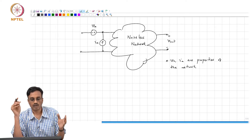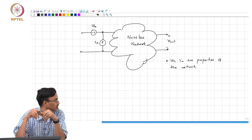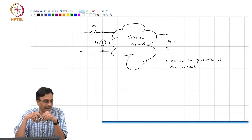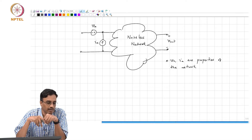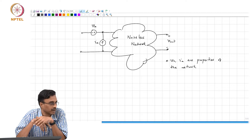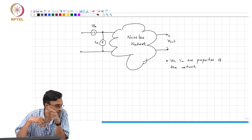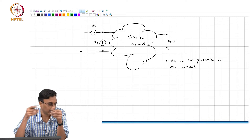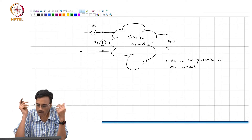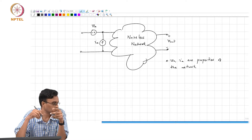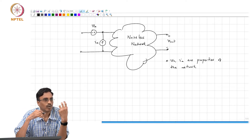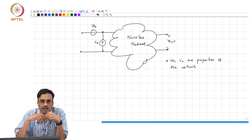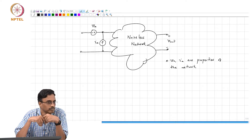If you want to hand this black box over to somebody else who might be using it, you not only give them the two-port parameters so that they will be able to figure out what the input impedance is and what they must drive this network with — you also give them VA and IA, and in principle that should be good enough to figure out what the output noise would be regardless of what source impedance you drive the network with.